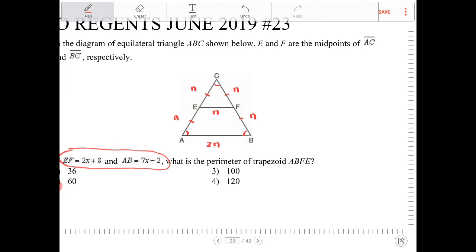Knowing these kinds of proportions, we can then figure out all the different side lengths here. I know that AB is going to be twice that of EF. So if that's the case, AB is 7X minus 2, and this is going to equal to 2 times 2X plus 8.